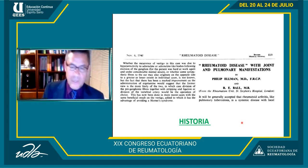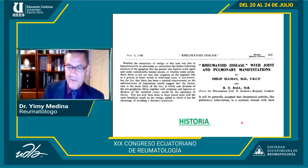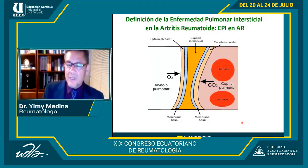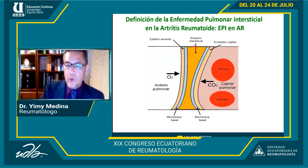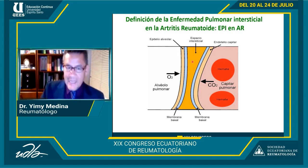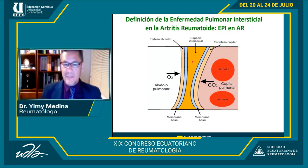El intersticio es el espacio que divide el alveolo y el capilar; cada uno tiene su membrana basal. El espacio intersticial permite la entrada de oxígeno al capilar y la salida de CO2 al alveolo. Cuando la enfermedad progresa, hay daño alveolar, daño en los capilares, hipertensión pulmonar, daño cardíaco, dilatación del ventrículo derecho, cor pulmonale, insuficiencia cardíaca y trastorno de la oxigenación. Es una enfermedad bastante catastrófica.